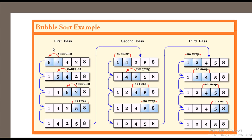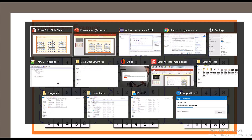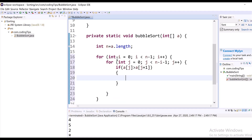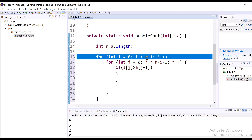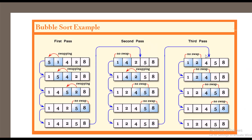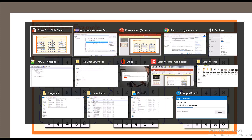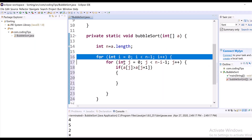As we saw in the slide, in the first pass we compared 5 and 1 — since 5 is greater than 1, we shifted them. I have written two for loops: one for loop is for each pass, and the inner for loop iterates over the elements to compare each pair. In order to compare 5 and 1 and then move 5 to compare with the next element, I have written the inner for loop using the variable j.